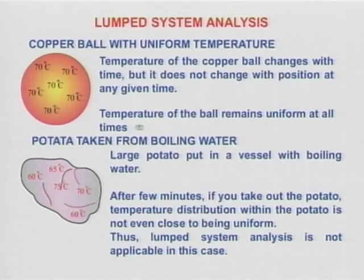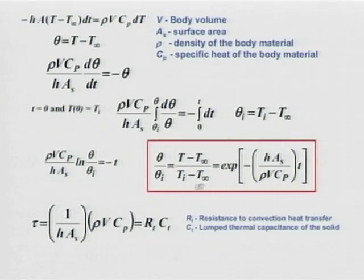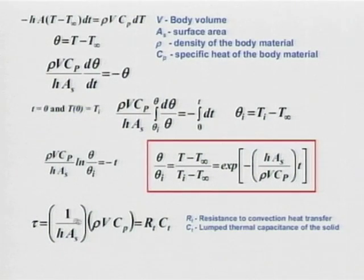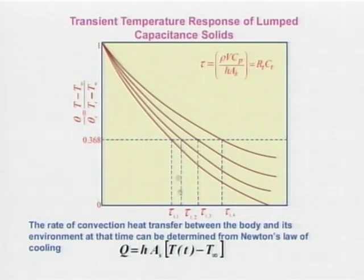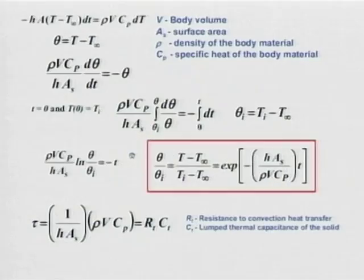Let us take a recap. The temperature is a function of only time — it is transient. It is a lumped system, and we put our lumped body into hot water and found the temperature distribution: (T - T_infinity) / (T_i - T_infinity) = e^(-t/tau), where tau is the time constant. Here, 1/hA is the resistance and rho*V*Cp is the capacitance. I had quoted at least two examples of how one can utilize this equation to measure the heat transfer coefficient.